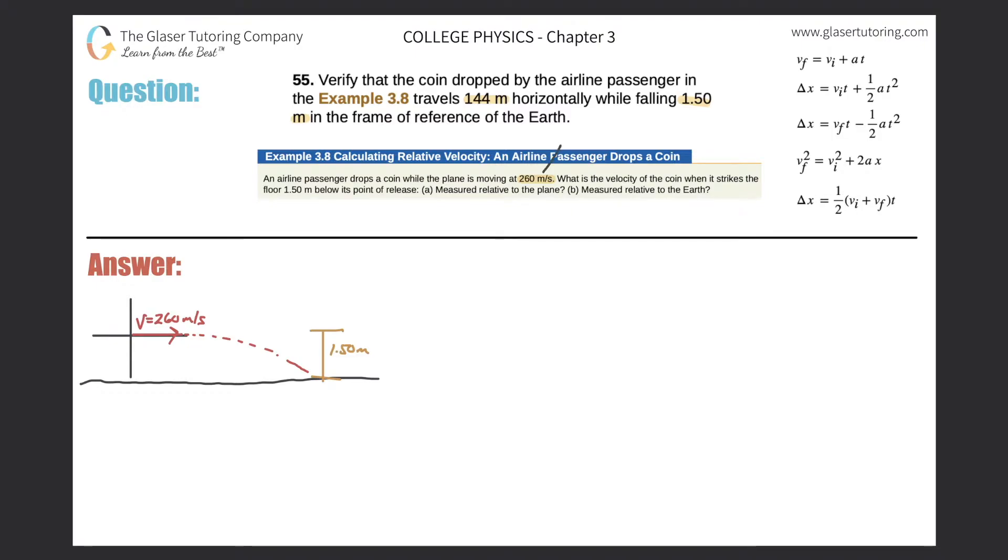Now that velocity you might be asking is relative to what? Well this is the velocity of the airplane relative to the Earth. So what is the velocity of the coin when it strikes the floor 1.50 meters below its point of release? And they only want us to focus now on letter B, measured relative to the Earth.